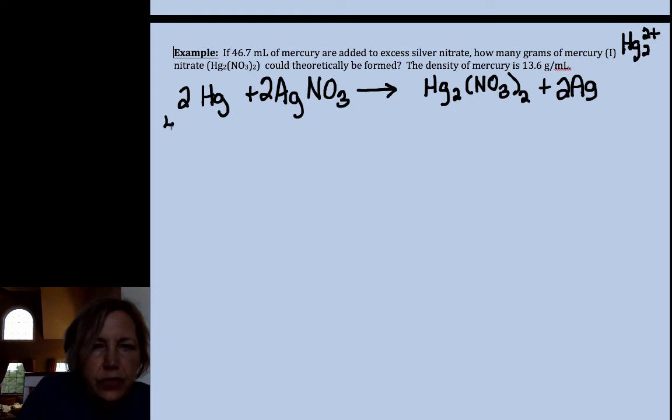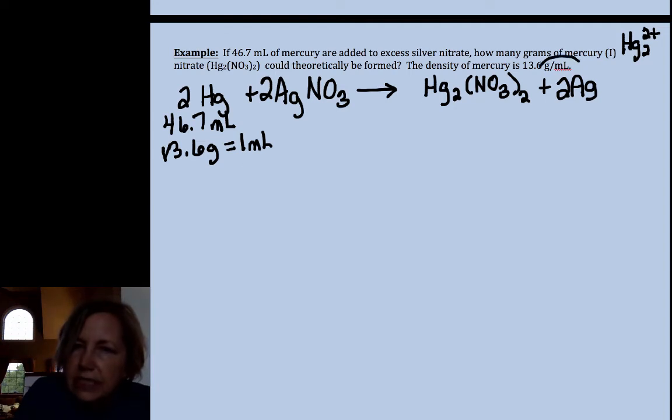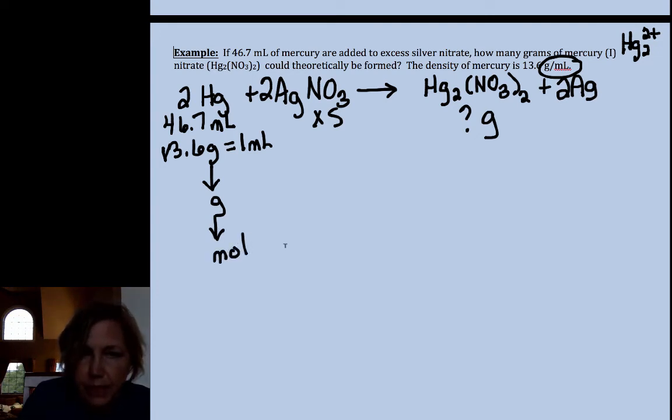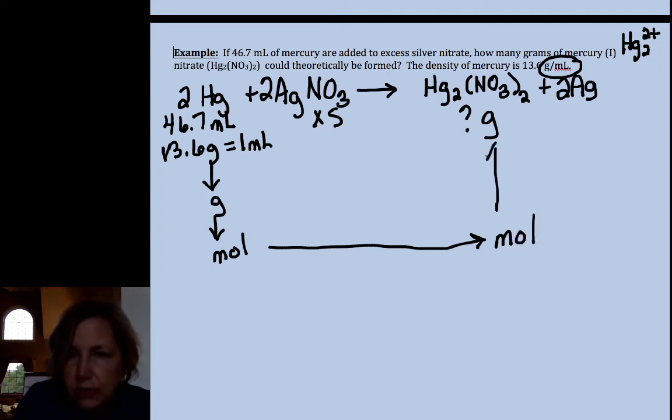Okay, this time I'm given 46.7 milliliters. I'm told that my density is 13.6 grams for every one milliliter. Again, I like to put a slashed unit as an equality. It helps me get direction. That's an excess and then it asks me how many grams of this I could make. So I don't know volume to moles. So before I get to the mole road, I have to go milliliters to grams, then grams to moles. And then we're going to go moles to moles, and then moles to mass using molar mass.